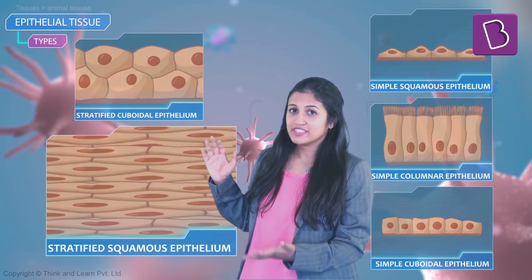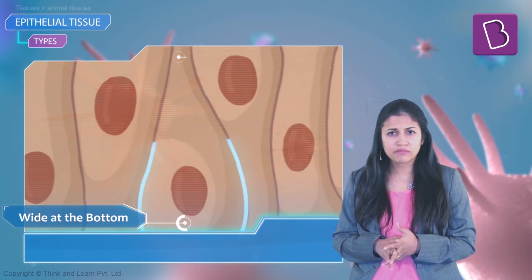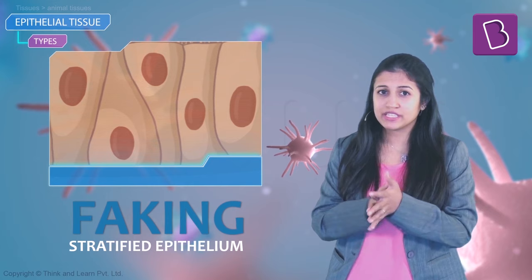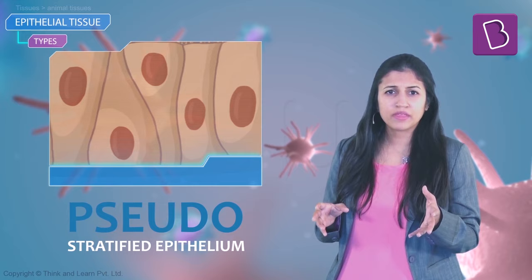This one is also stratified with squamous cells, so it's stratified squamous. The last one is tricky — it looks neither simple nor stratified. Some cells are wider at the bottom and narrow at the top, while others are narrow at the bottom and wider at the top. It's like they're faking stratified epithelium.